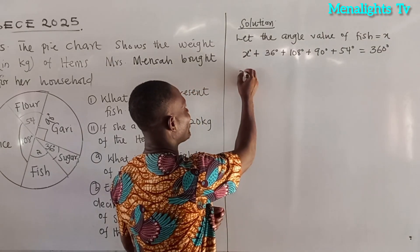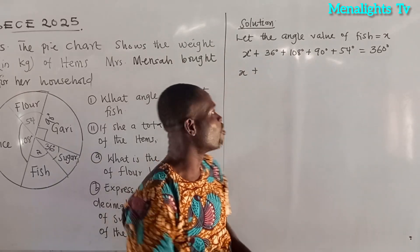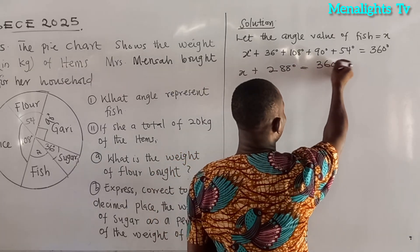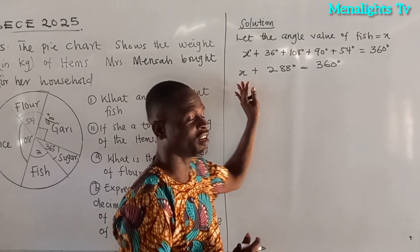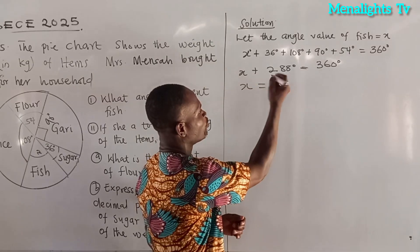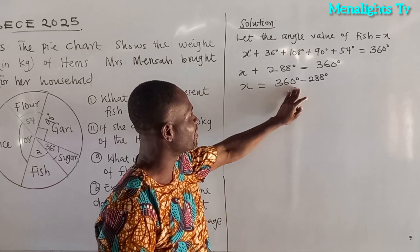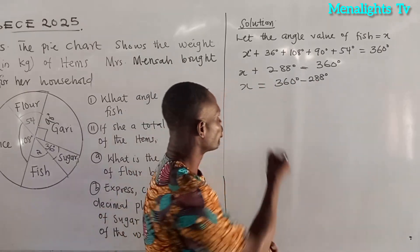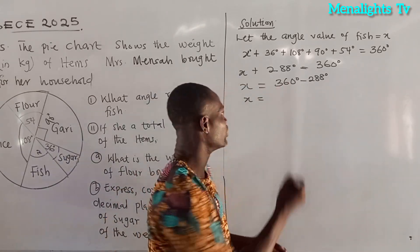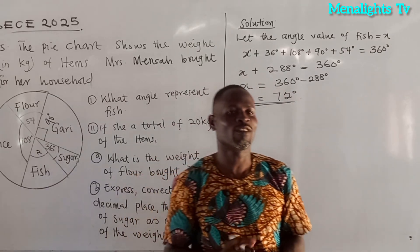So from there, x plus 36 + 108 + 90 + 54 gives us 288 degrees, which equals 360 degrees. Grouping like terms, x = 360 degrees minus 288 degrees. When you take 288 from 360, you are left with 72 degrees. So 72 degrees is the angle sector for fish.